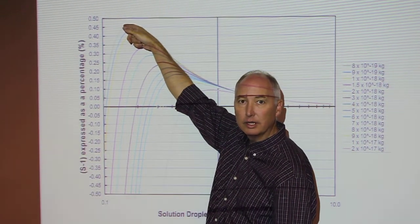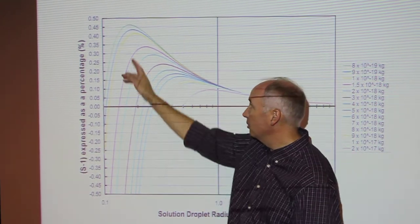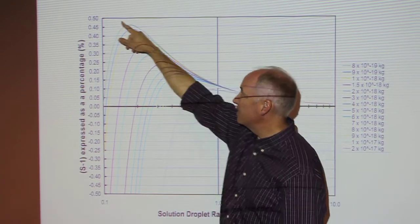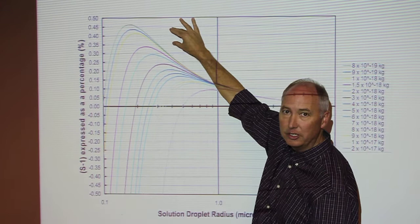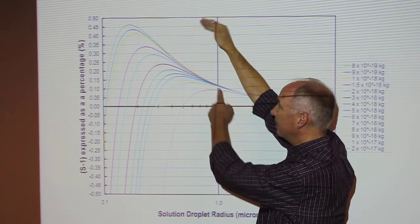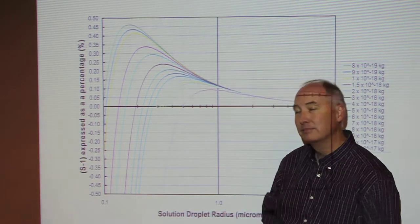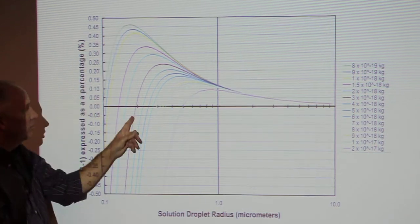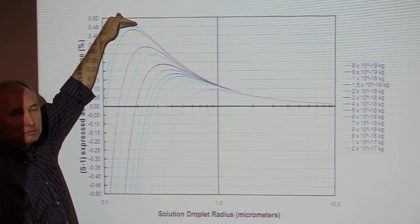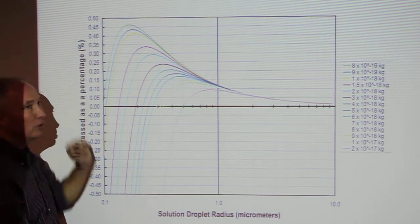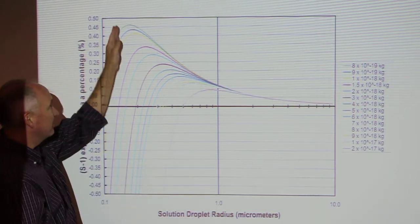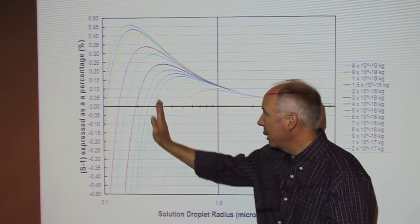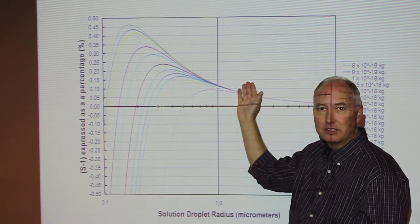There's still more water vapor in the air than necessary for equilibrium, which means that particle will continue to grow. As the particle grows, the equilibrium saturation vapor pressure decreases, and if the environment stays at 0.5% supersaturation, the supersaturation of that particle gets bigger and bigger, and it continues to grow as long as relative humidity stays above 100%. If environmental humidity didn't reach the critical supersaturation, that particle would never be activated into a cloud droplet — it would stay as a haze droplet. Any particle at equilibrium below its critical radius is a haze droplet; anything that grows beyond is a cloud droplet.